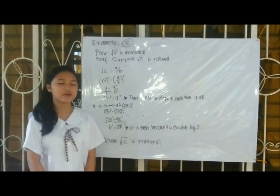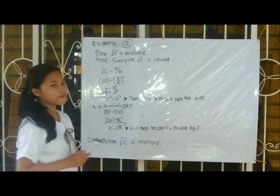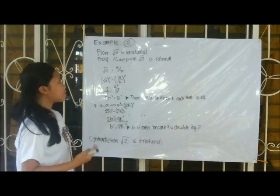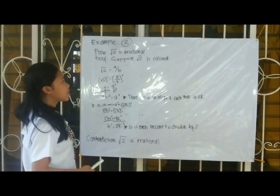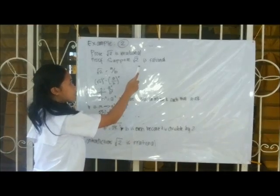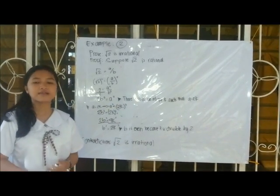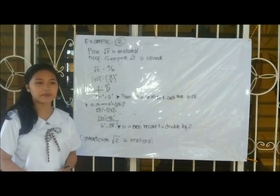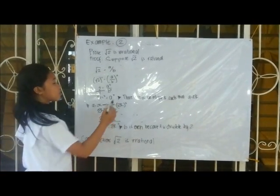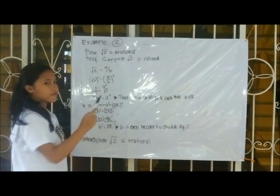Let me give you another example. Example number 2: Prove that the square root of 2 is irrational. When writing the proof, we write the opposite of the original statement. So suppose the square root of 2 is rational. A rational number is a fraction of one integer divided by another, so we can write it as a over b. Thus, square root of 2 equals a over b.